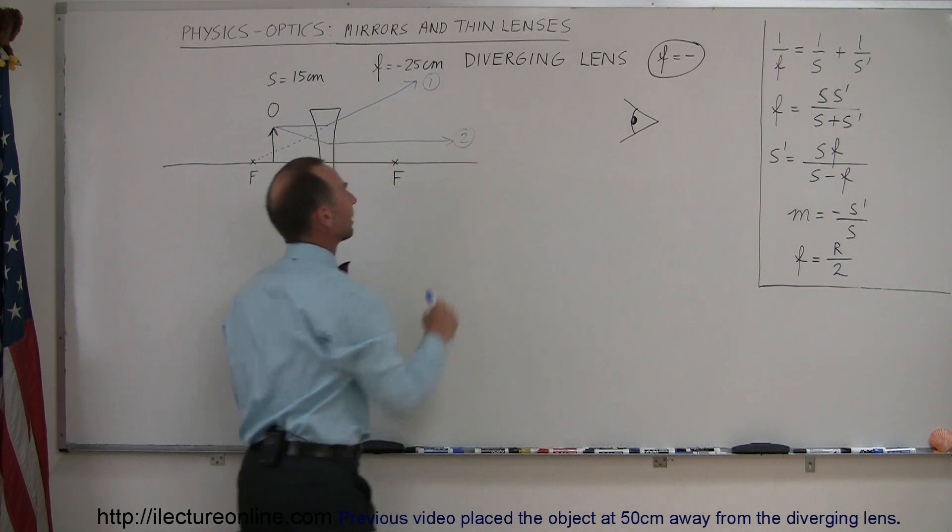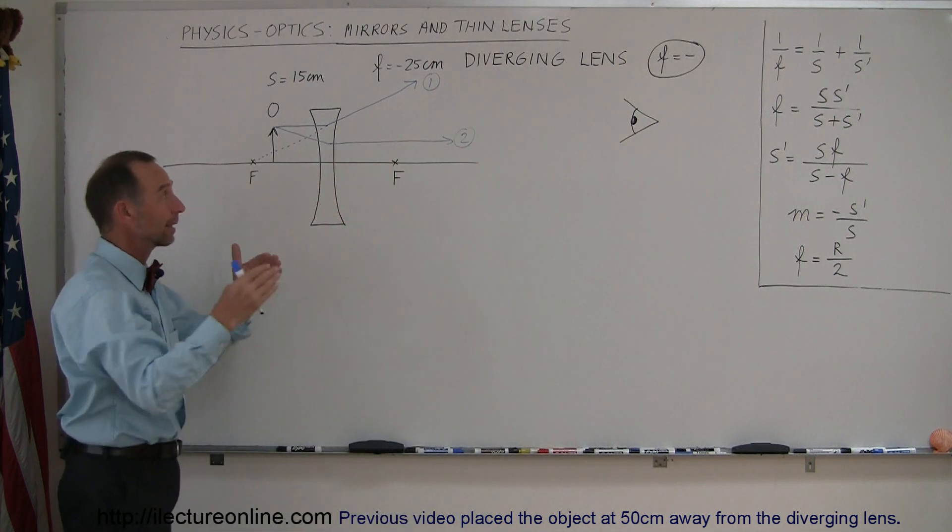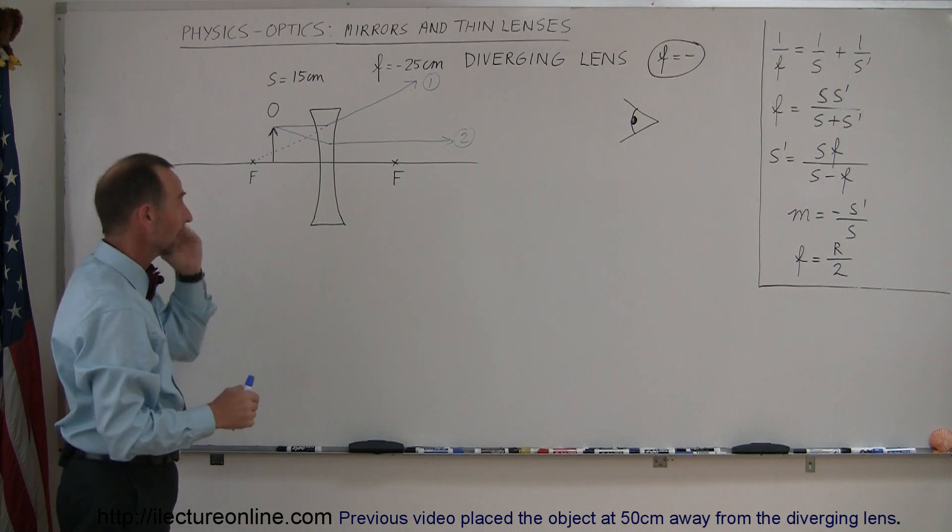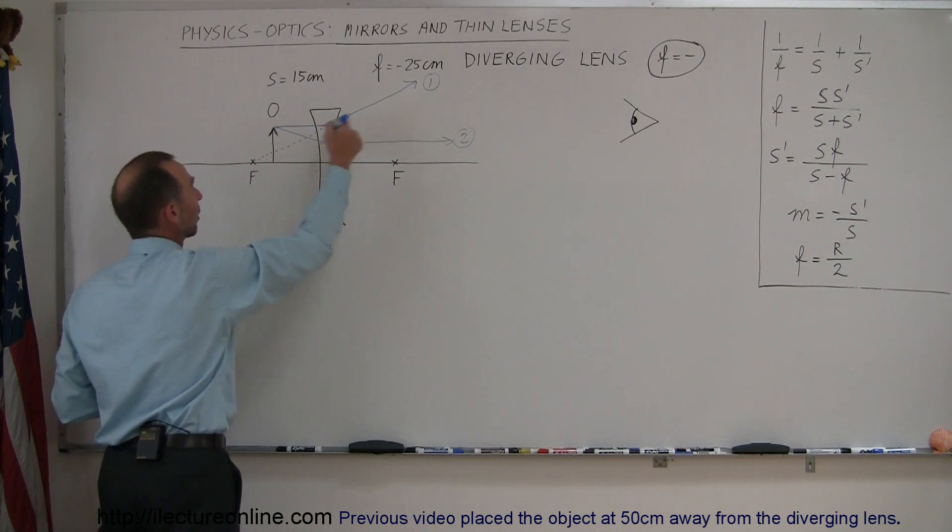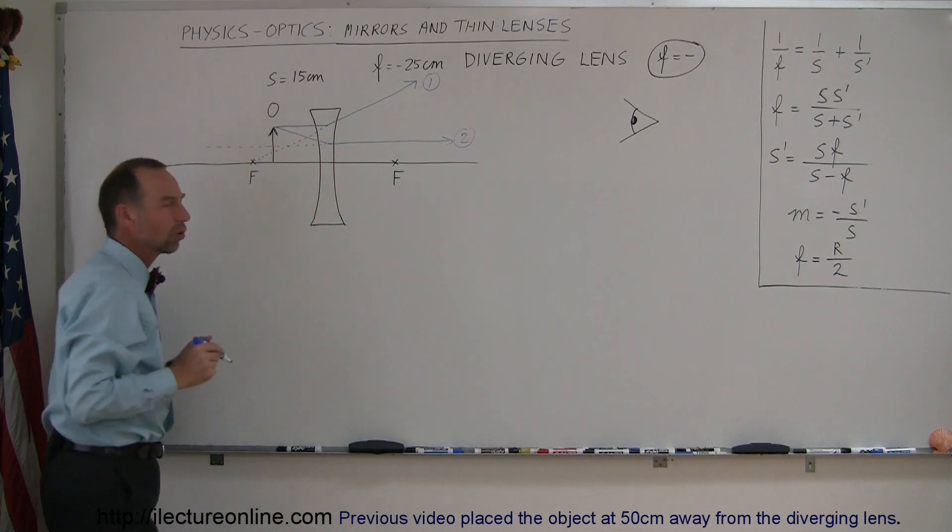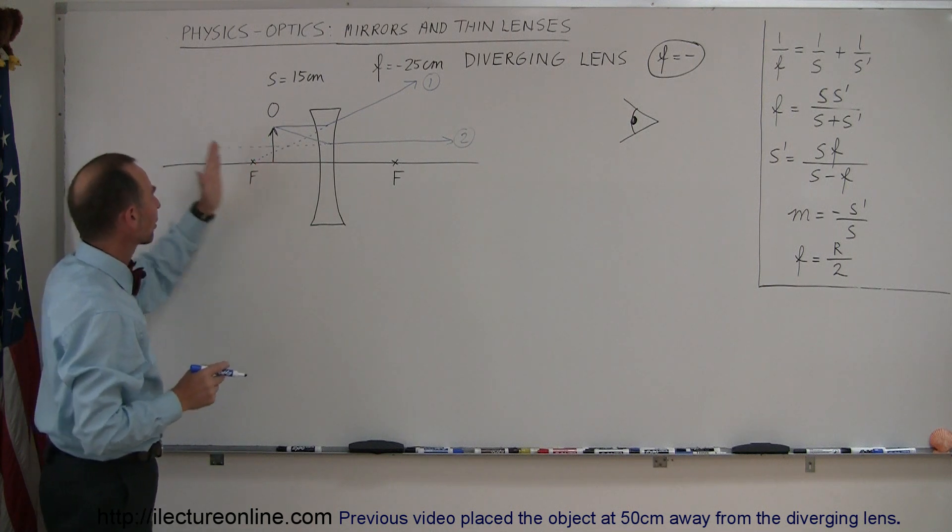Here's our observer, seeing the two rays. Again, the rays are diverging, not coming together, not forming a real image behind the lens, but the brain jumps into action, says, I know where those rays are coming from. This first ray is coming from here, the second ray is coming from back here, and notice that it looks just like it did when we put the object further out.